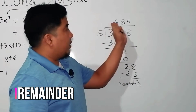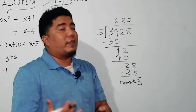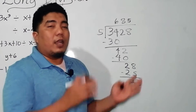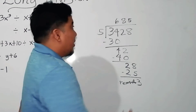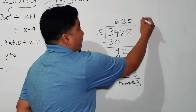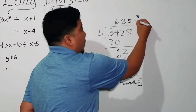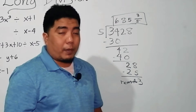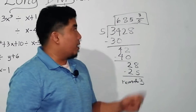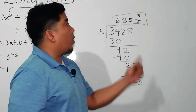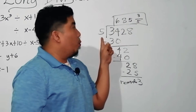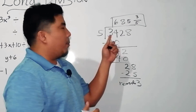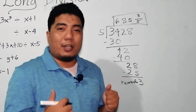The number above your dividend is what we call the quotient. Our final answer, since we have a remainder, is 685 and 3 over 5, or 3 fifths. That remainder should also be part of your final answer, because if you wanted to check, this whole answer will be multiplied by your divisor and you will come up with 3,428.